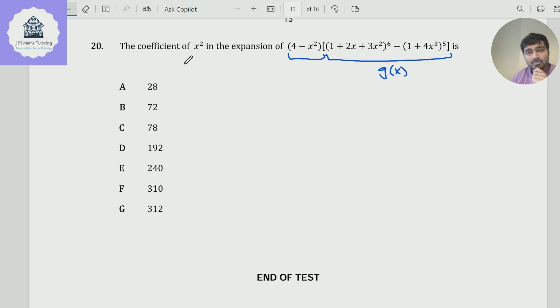Now we want to know the coefficient of x² when I also multiply g(x) by 4 - x². So how can I get a coefficient of x²? Well, either I multiply this 4 by the coefficient of x² in g(x), or I multiply this -x² by the constant term in g(x). So all I really need to consider is the constant term of g(x) and the coefficient of x².